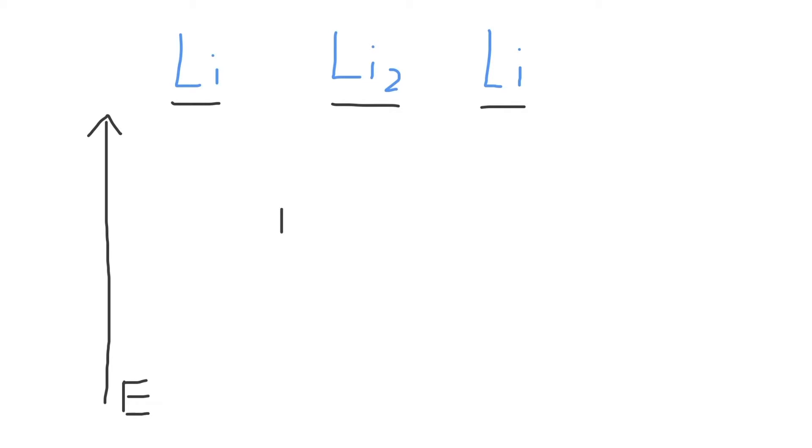From the periodic table, we can see that this is equal to 1s², 2s¹, telling us the highest energy atomic orbitals in lithium are the 2s atomic orbitals.